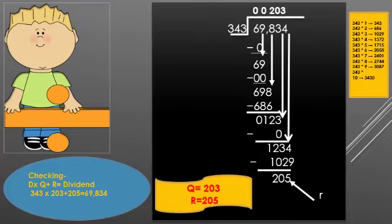Before starting the division, we have to list out the multiples of the divisor. Here the divisor is 343, so first you need to list out all multiples of 343 up to 10. For example, 343 into 1 equals 343; 343 into 2 equals 686. I have already listed the multiples up to 10.